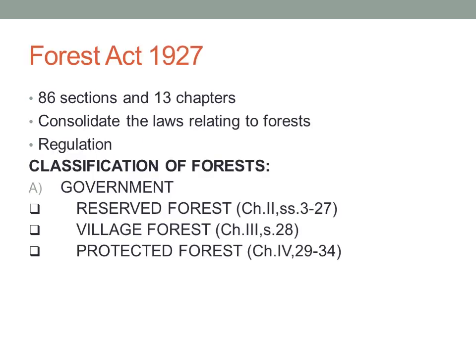That law was also not sufficient enough to make forest laws more effective, and to improvise on this legislation, a very comprehensive act was enacted in 1927 which repealed all the previous laws. The Indian Forest Act of 1927 consists of around 86 sections divided into 13 chapters. The main objective was to consolidate laws relating to forests, to regulate the transit of forest produce, and to levy duty on timber and other forest produce. Strangely, this enactment did not define forests.